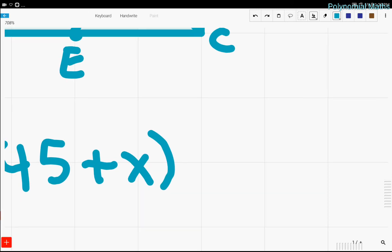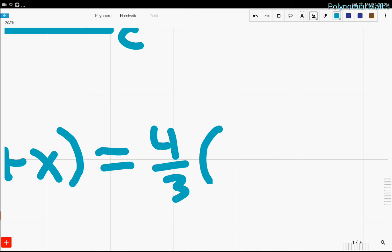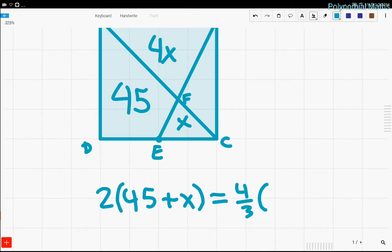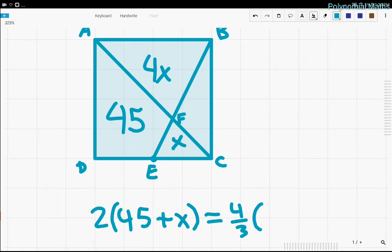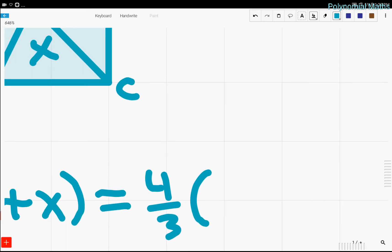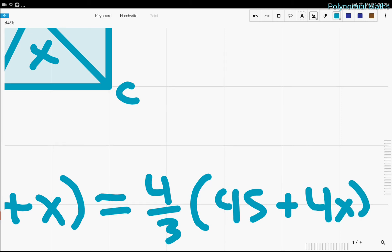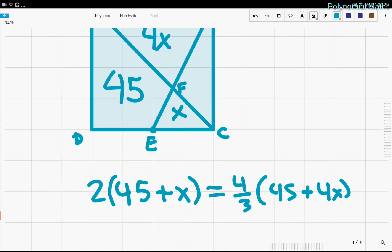So we can set these equal to each other and solve for X. 4 thirds of the entire area of that trapezoid ADEB, which is equal to 45 plus X, 4X. And now we have an equation and we can solve for X.